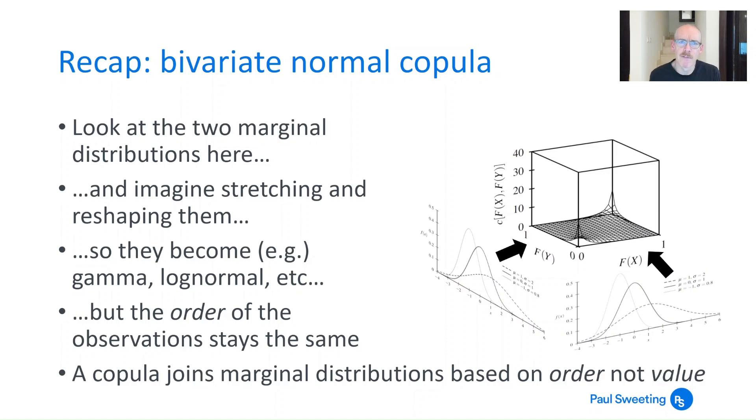Another recap on a bivariate normal copula. This is one of the easiest ones to understand. Think about a normal distribution as being made up of three things really: two marginal normal distributions and the thing in the middle that joins them together.